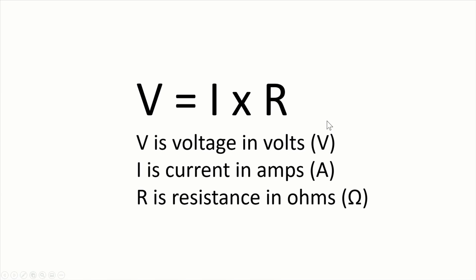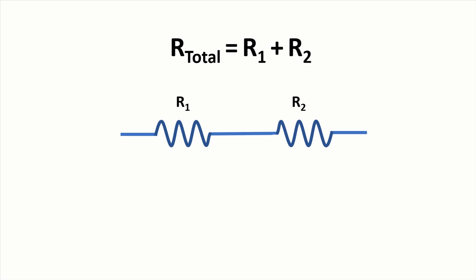So here's the main formula used around resistors, it's called Ohm's law, so voltage is equal to current times resistance. And if you connect two resistors in series and you want to get the total value of the resistance, then you add the two values together, quite simple.